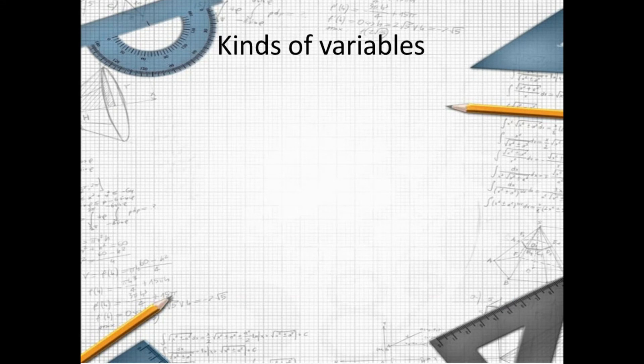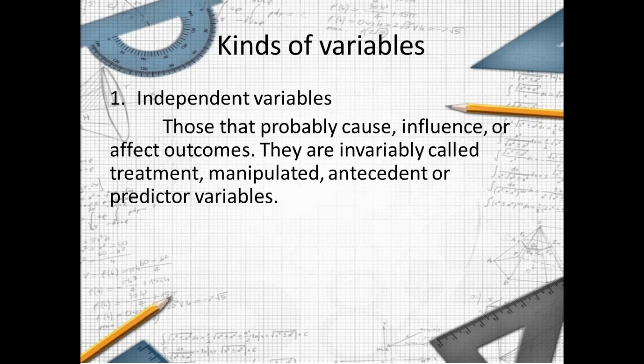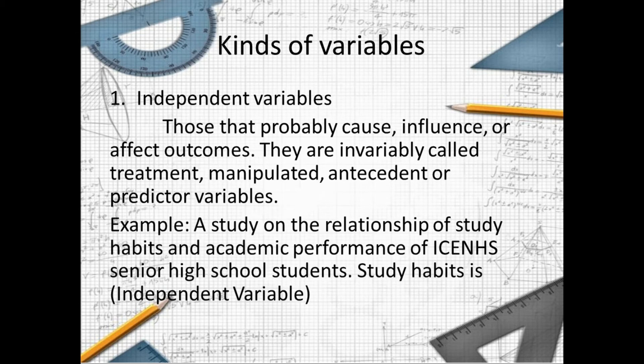So we have also the kinds of variables. We have the independent variable. Those that probably cause, influence, or affect outcomes. They are invariably called treatment, manipulated, antecedent, or predictor variables.